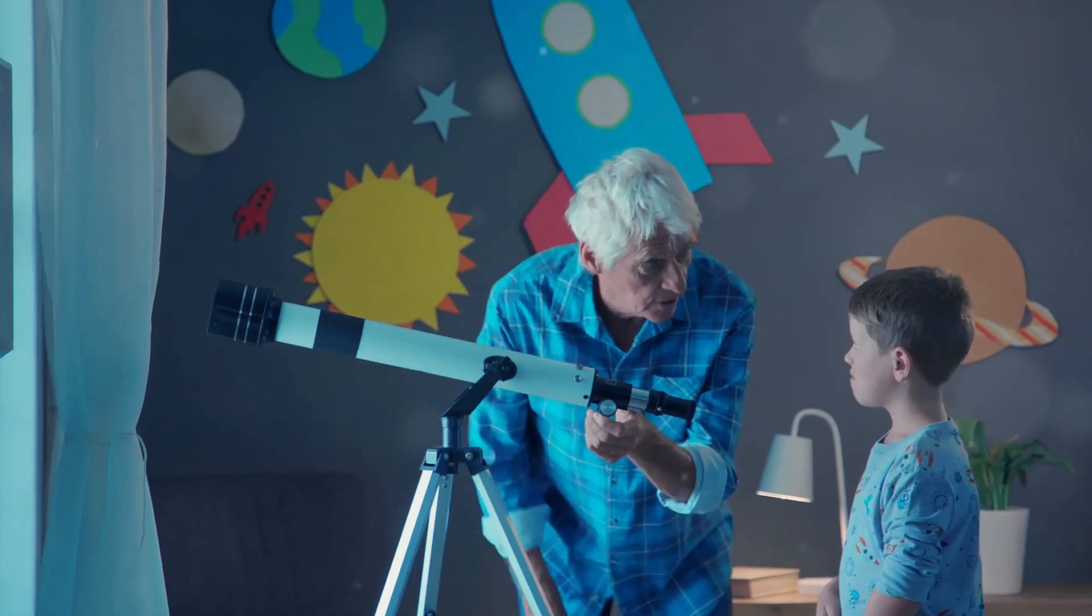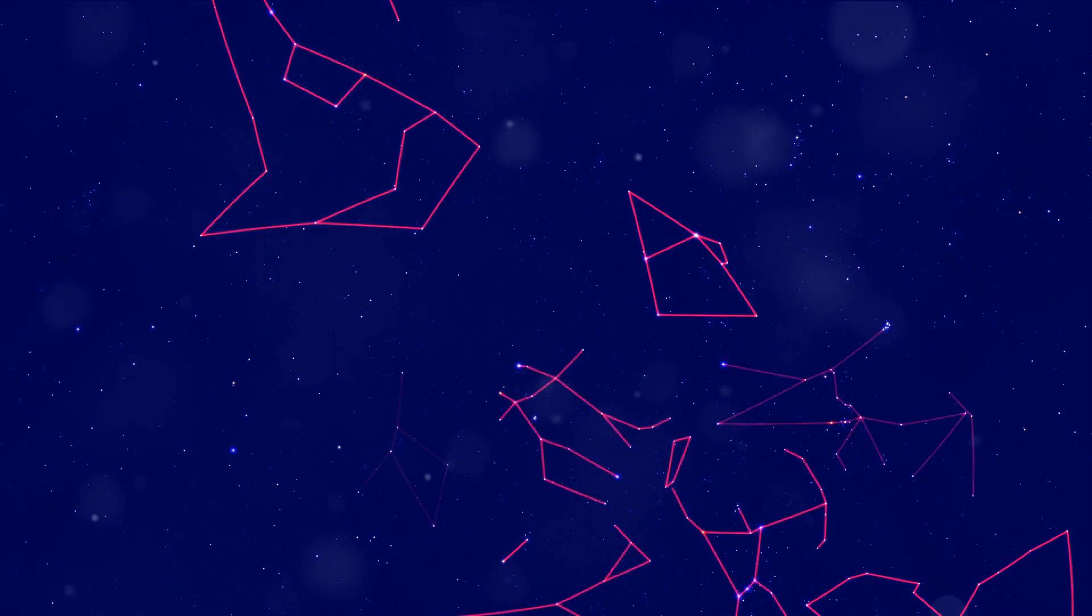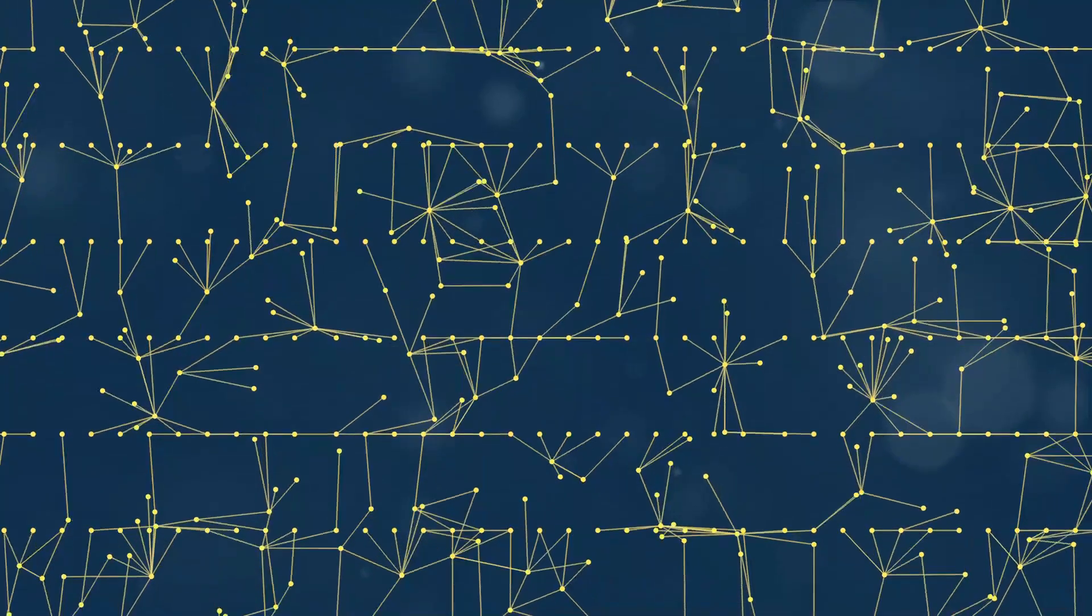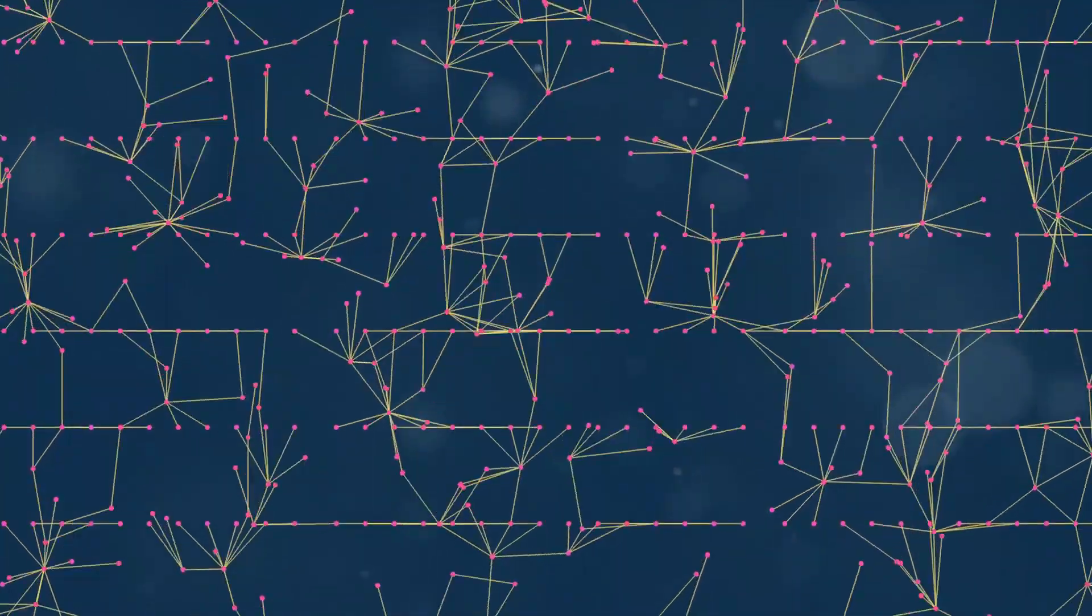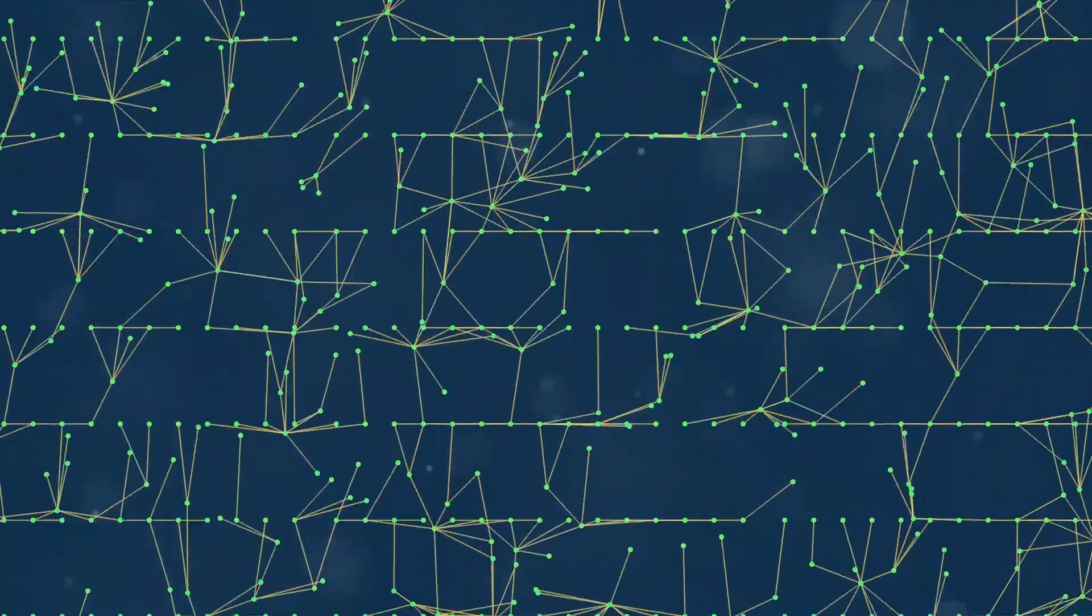Now do you wonder how to find constellations? Finding constellations can be a bit like a treasure hunt. The night sky is like a giant map filled with starry clues. The first thing you need to know is that constellations are not just random stars, but they form patterns, like a connect-the-dots game.